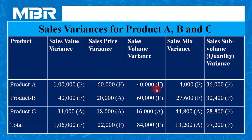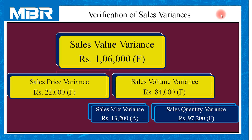For the purpose of verification, we can fit all the data in chart form to cross-check whether calculations are correct. All five variances are associated with each other: sales value variance Rs. 1,06,000 favorable; price variance Rs. 22,000 favorable; volume variance Rs. 84,000 favorable; mix variance Rs. 13,200 adverse; and quantity variance Rs. 97,200 favorable. We can complete the database from incomplete information using mathematical calculations.